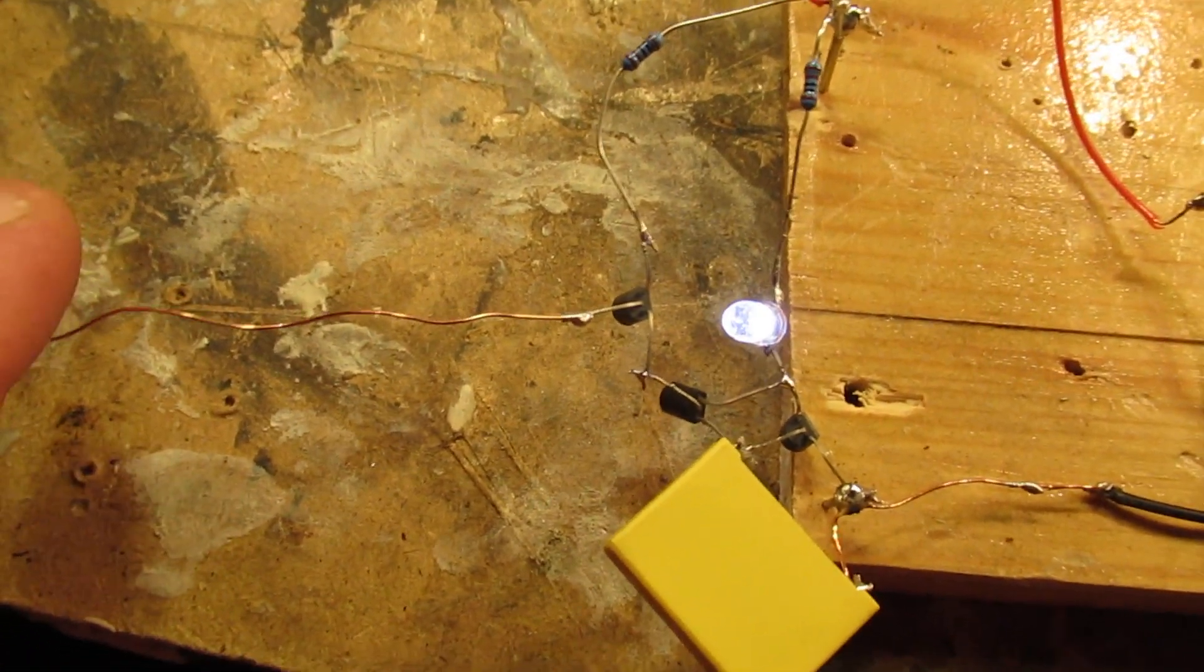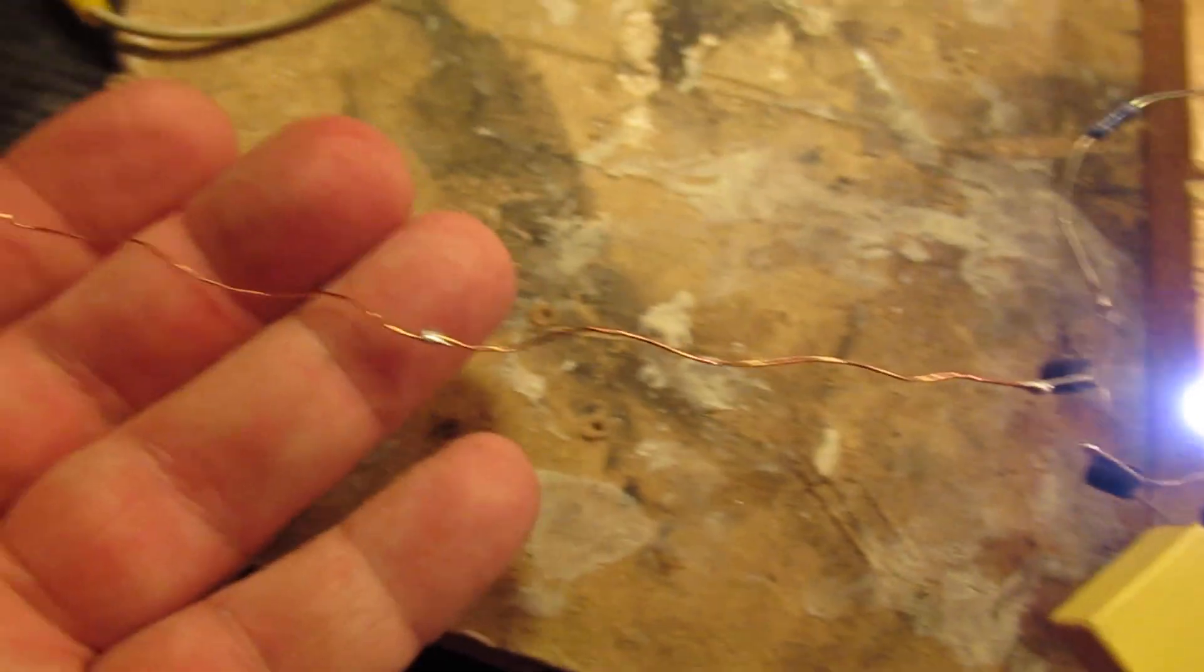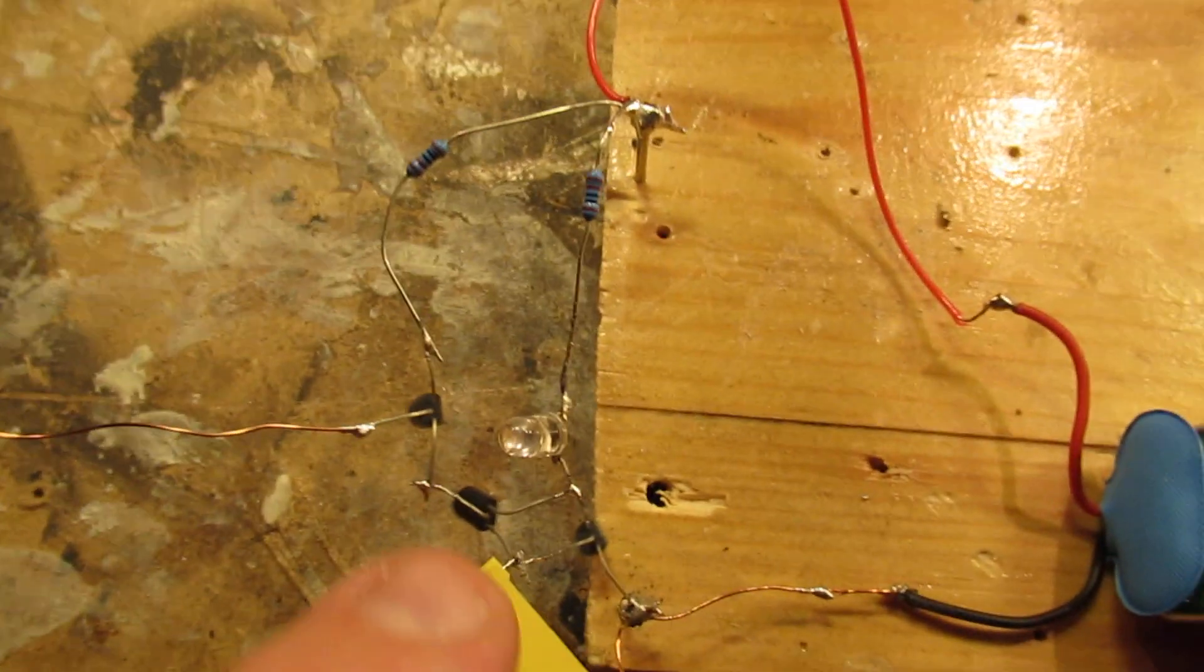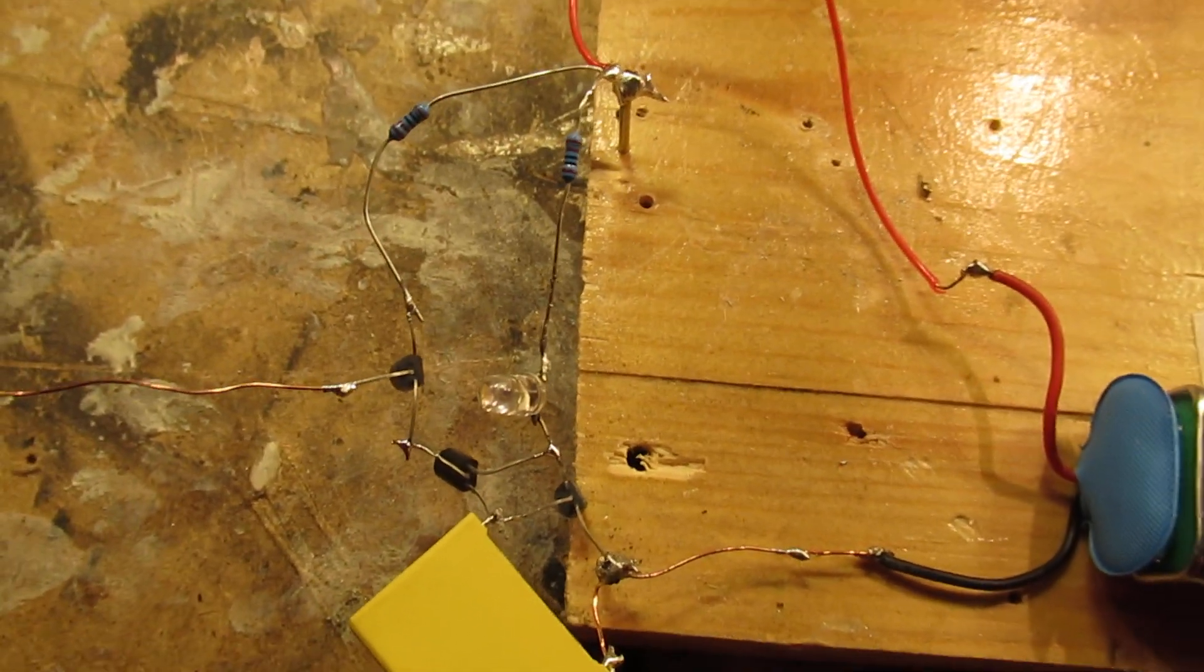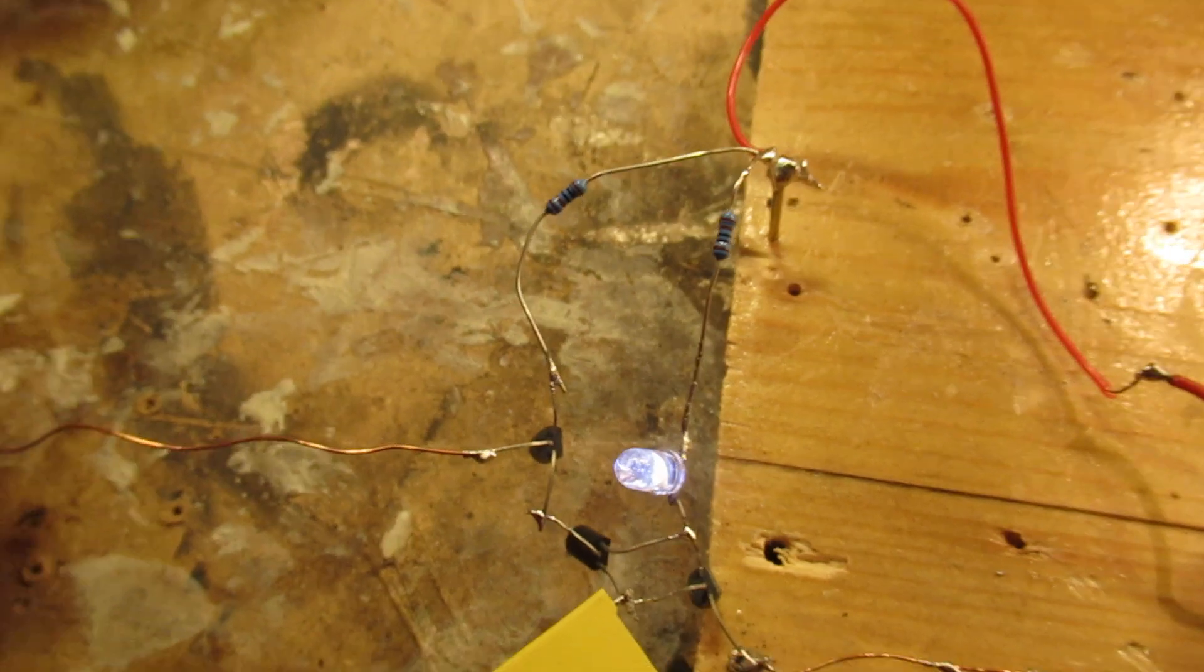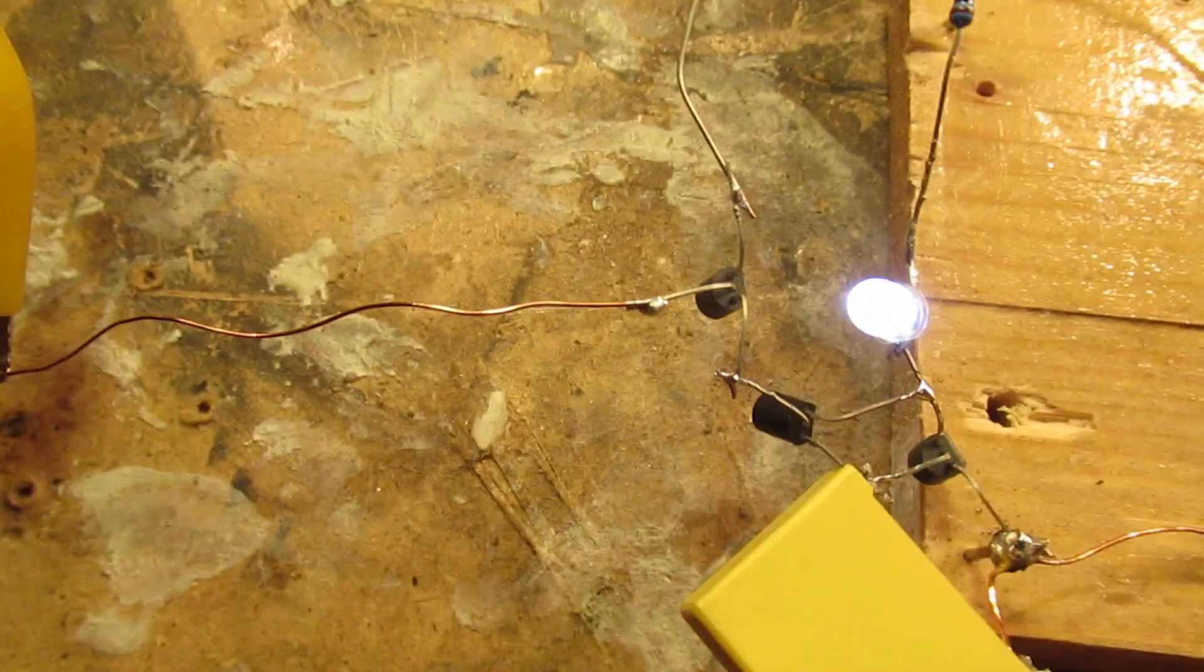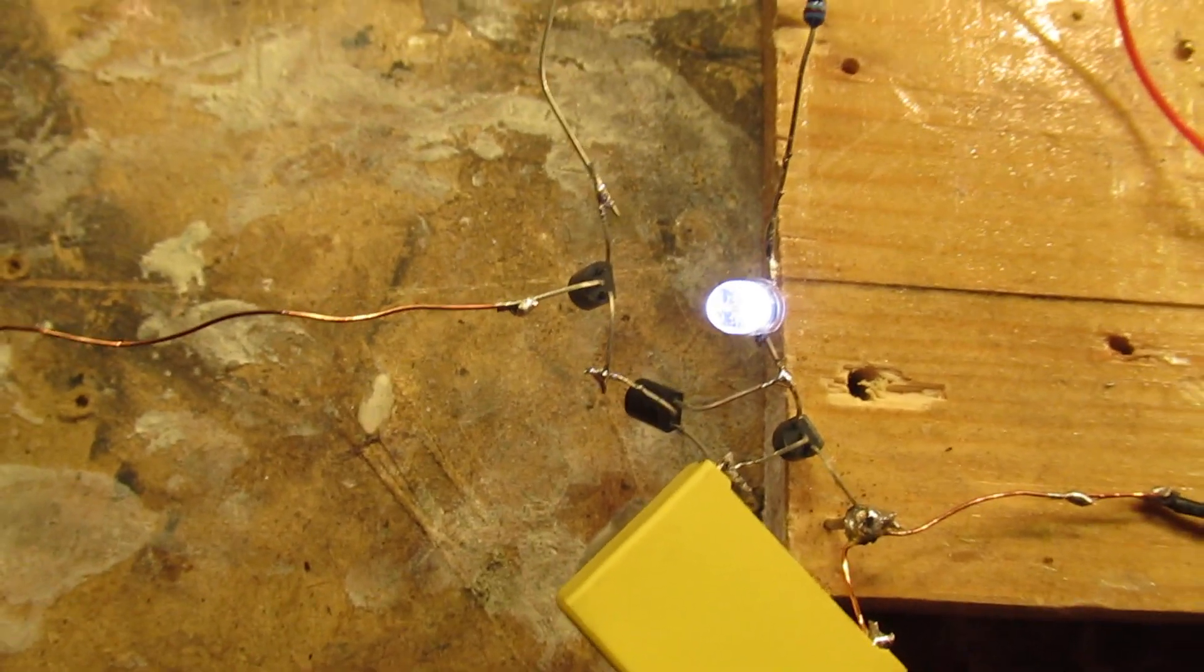When you do experiments you can for instance make the antenna somewhat longer. When you make it too short it is not sensitive enough. And when you make it too long, for instance with this crocodile clip, the wire is now connected to the antenna and it picks up so much hum from the environment that the LED constantly lights up.